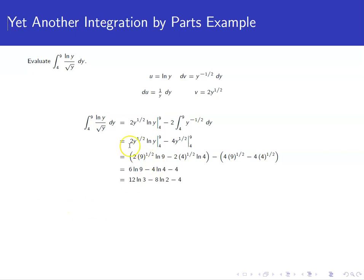So now when we replace our integral using our integration by parts formula, u times v is 2y to the 1 half log y. I have to evaluate that piece for the limits, so I need to evaluate that from 4 to 9.